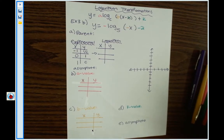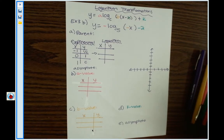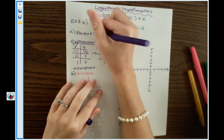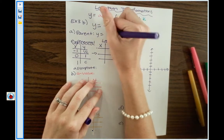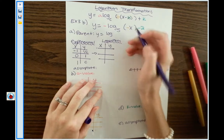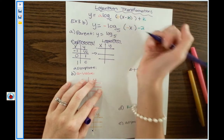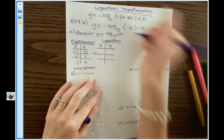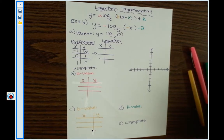The first step is identifying the parent function — the most simple form of our log graph. All we need for the parent function is the base of the log and an x. So we're going to have y equals log base 5 of x. That's our parent function.